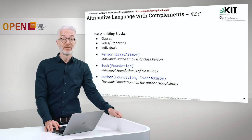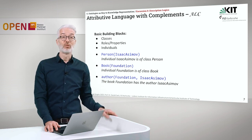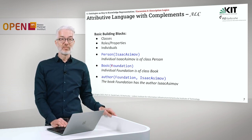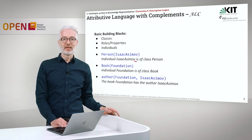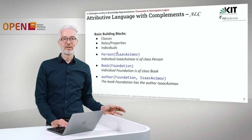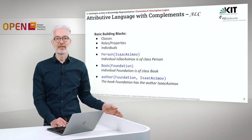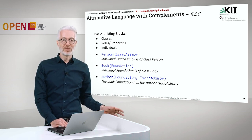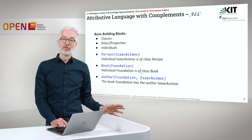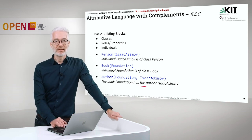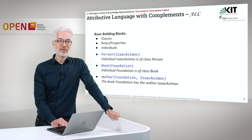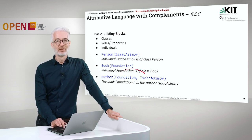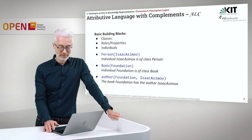The building blocks are classes, properties — here called roles — and individuals. For example, the individual Isaac Asimov is of class Person, written as Person(IsaacAsimov). Foundation is a book: Book(Foundation). For roles, the book Foundation has the author Isaac Asimov — the role 'author' connects Foundation and Isaac Asimov. This is quite simple.